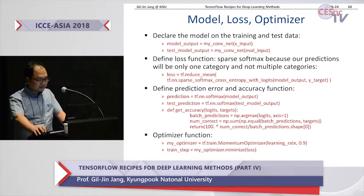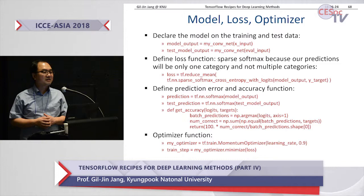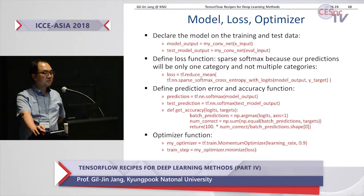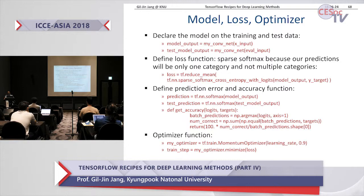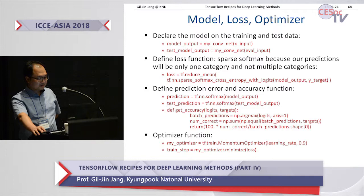Those are the accuracy definitions. We want to define the optimizer — this time it is using a momentum optimizer. Momentum optimizer is similar to stochastic gradient descent, but it uses previous momentum, the previous derivative, to optimize the current values. Training is defined by minimizing the loss, where the loss is defined by these lines.